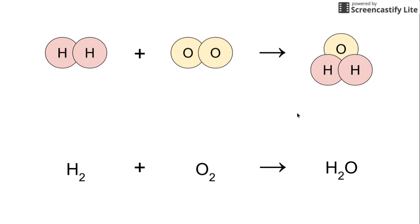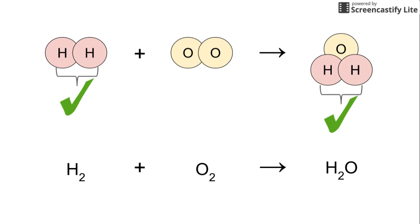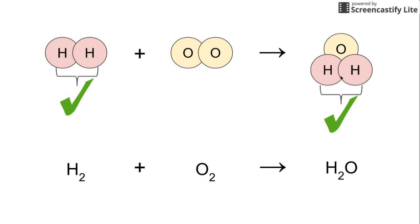Let's start checking. On the reactant side, focusing on the first molecule H₂, we can see in the visual model that we've got two H's. Moving over to the product side and counting the H's in the one molecule of water, we also have two H's. So right now we're off to a great start — that is considered balanced. We have two H's on this side and two H's on that side.